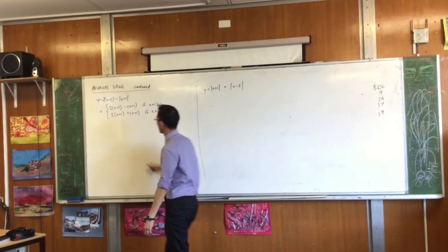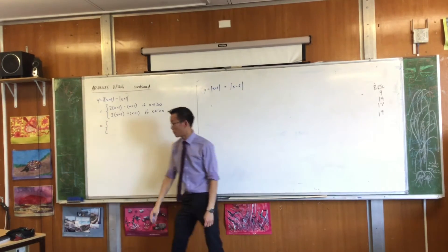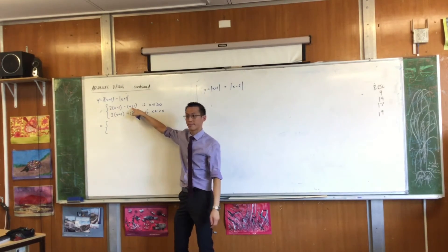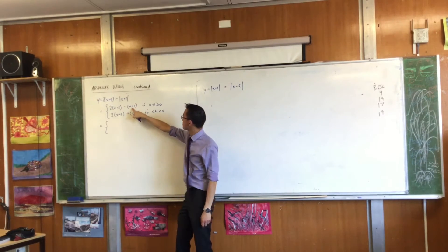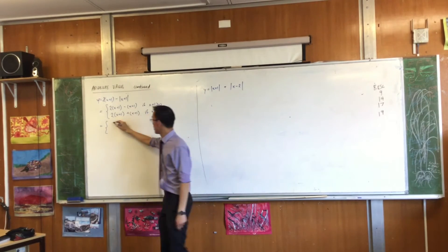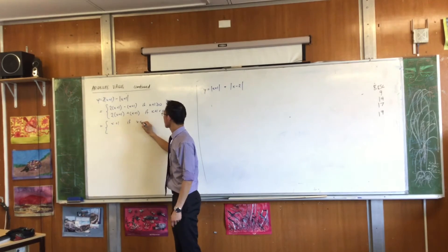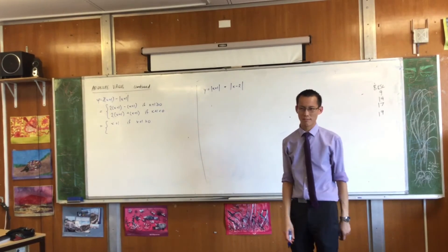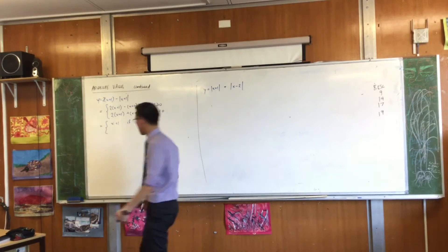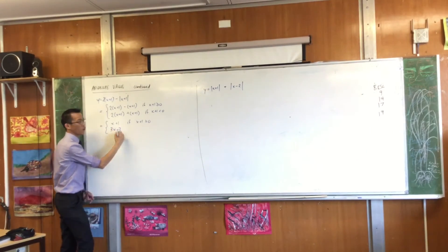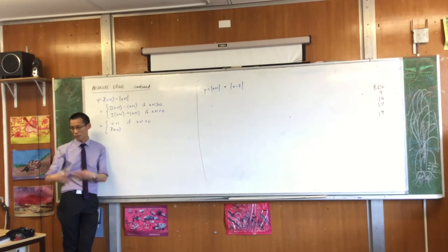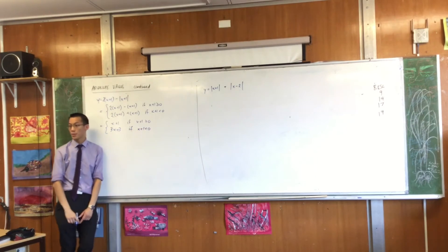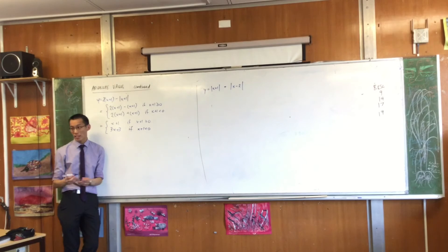Now that I've gotten rid of the absolute value signs, I can actually collect some like terms. Drawing my table with two columns — two lots of something take away one. For the first case, you have x plus one, so what do you get? For the second case: two of x plus one, then another one — that's three of them. I could write that as three times x plus one, but I'll just expand it since I'm going to graph this in a second.